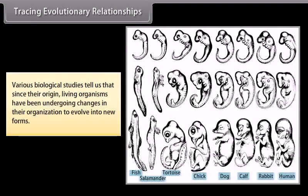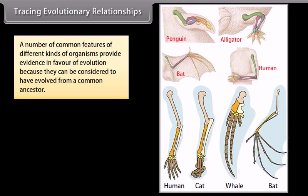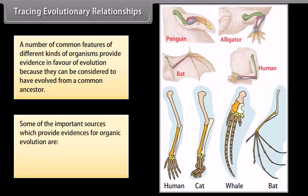Various biological studies tell us that since their origin, living organisms have been undergoing changes in their organization to evolve into new forms. A number of common features of different kinds of organisms provide evidence in favor of evolution because they can be considered to have evolved from a common ancestor. Some important sources which provide evidence for organic evolution are homologous organs and analogous organs.